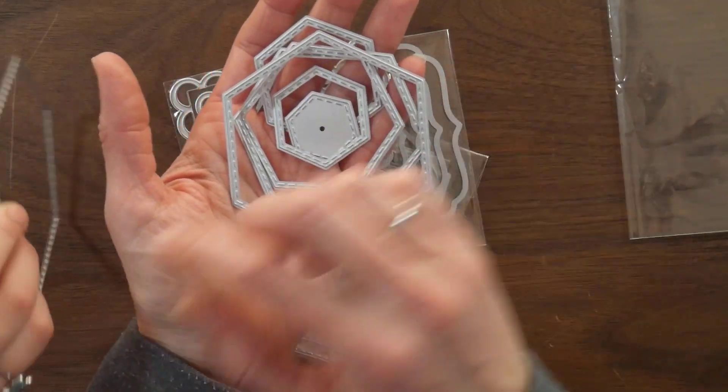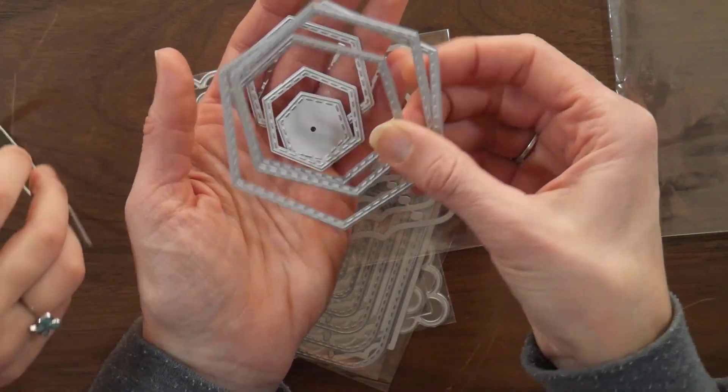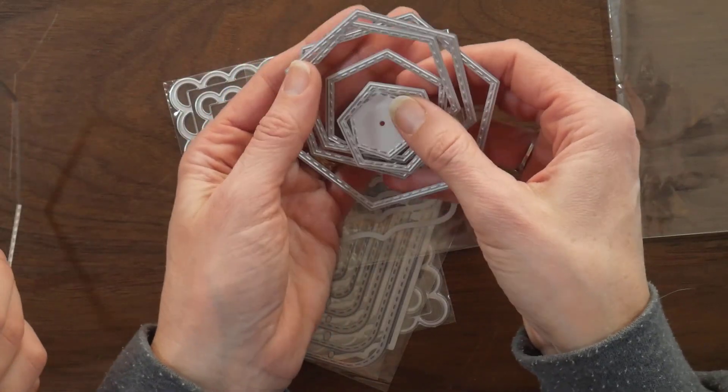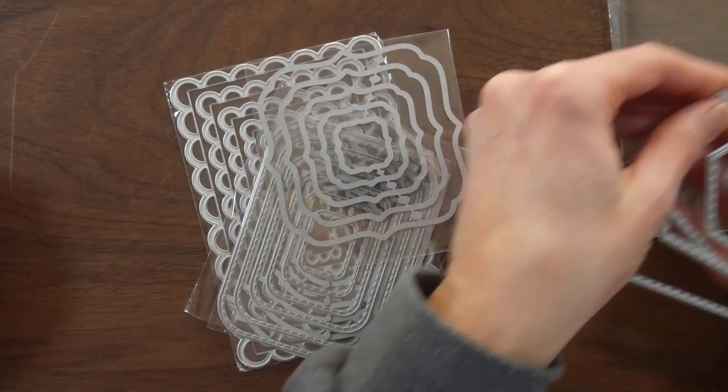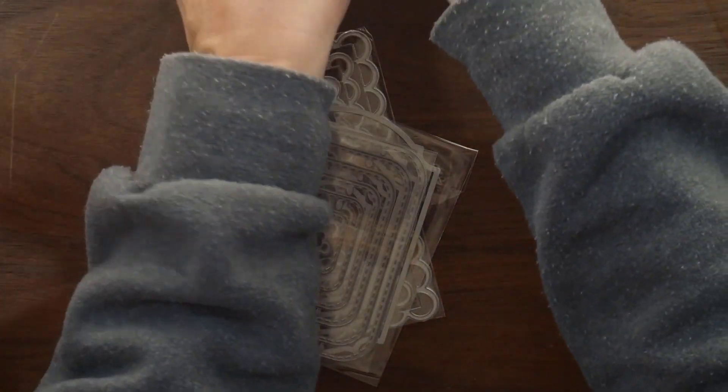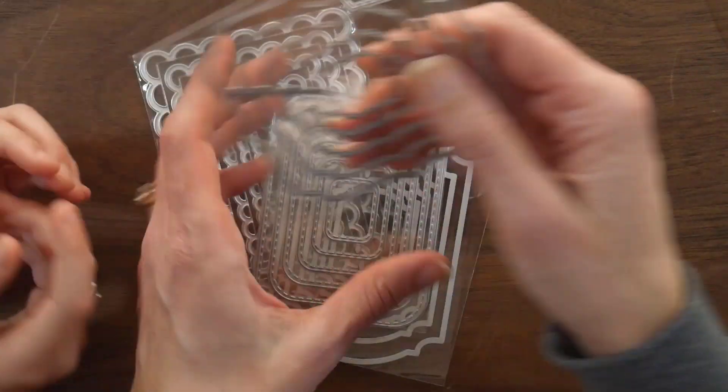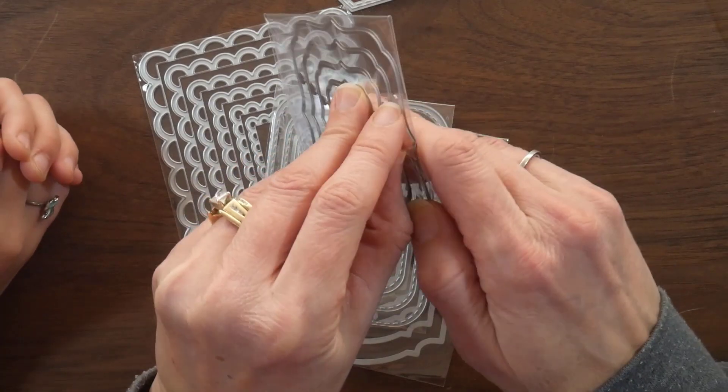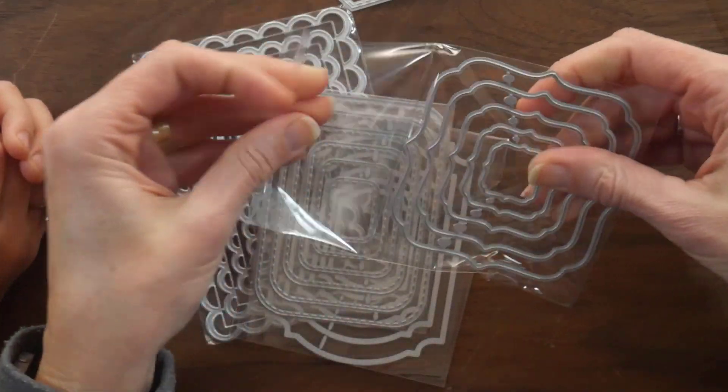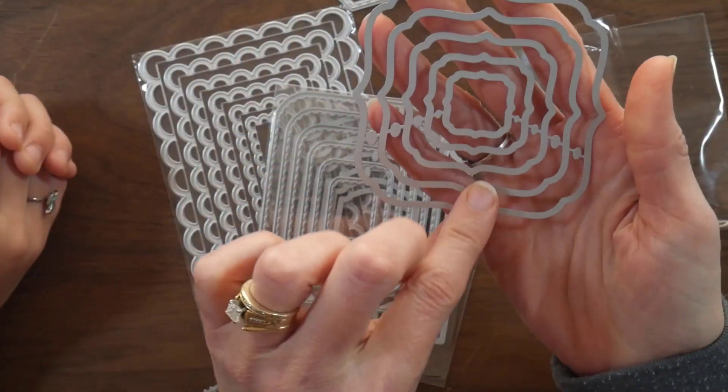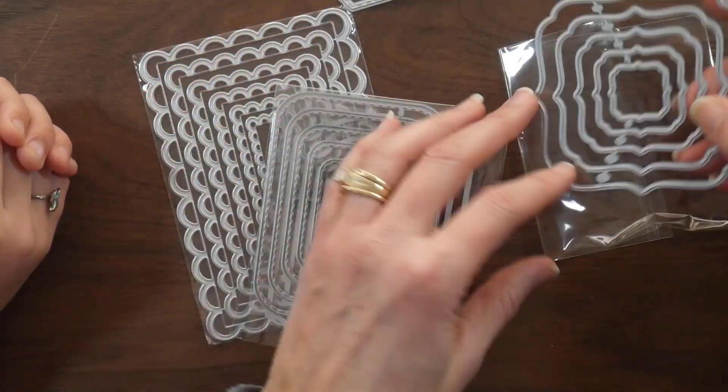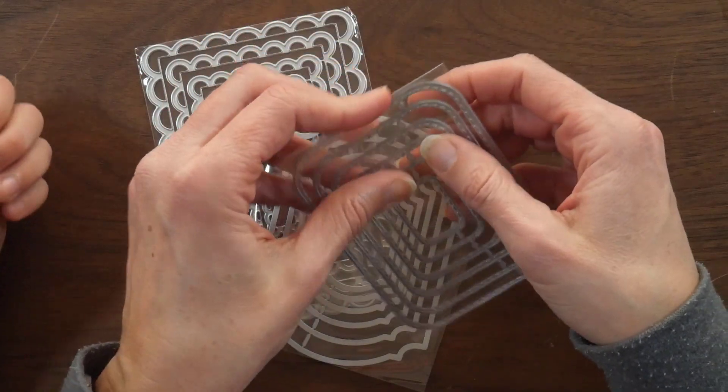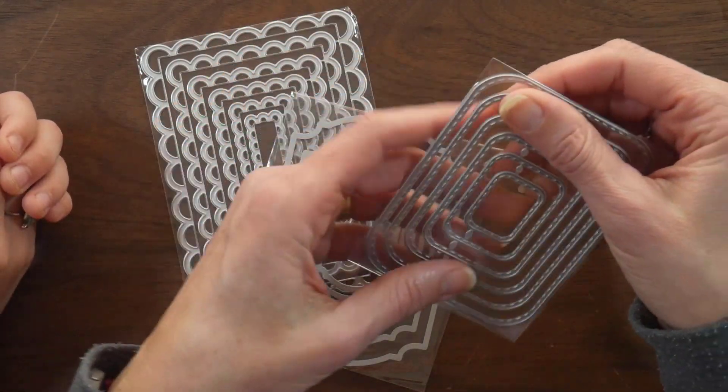And so there's one, two, three, four, five, six, seven different nested layers here. And then this one is just kind of like a fancy label square, but again, it's nested and there's no stitching on this one. It's just the little nested, not scalloped, but I don't know, fancy label.